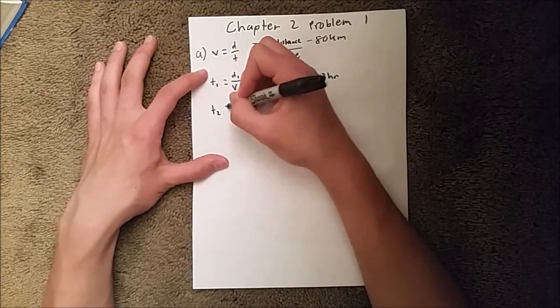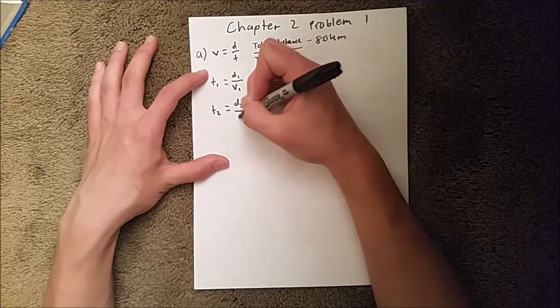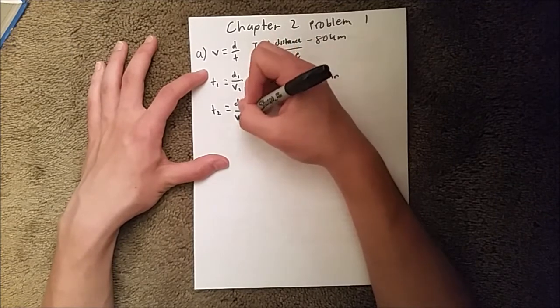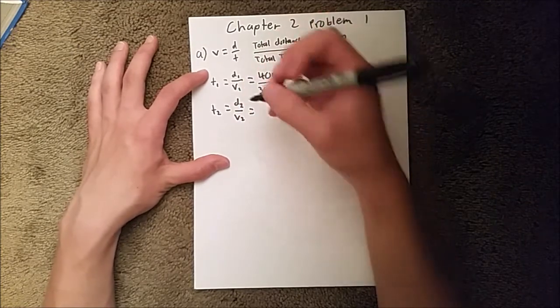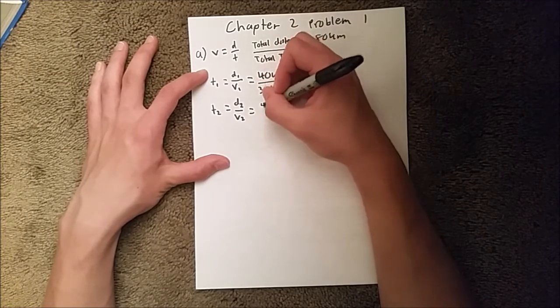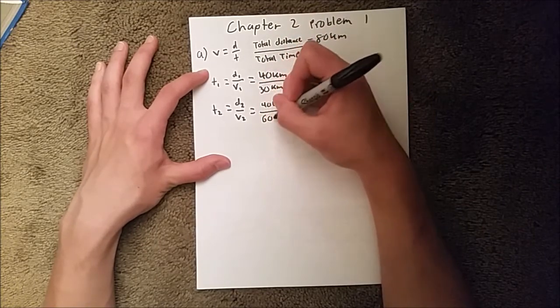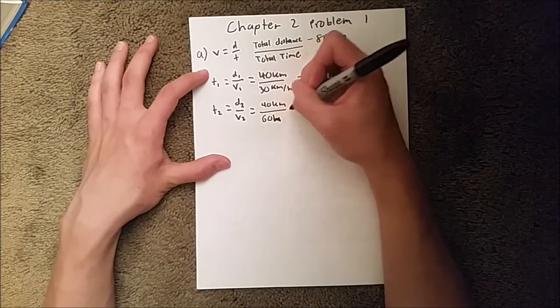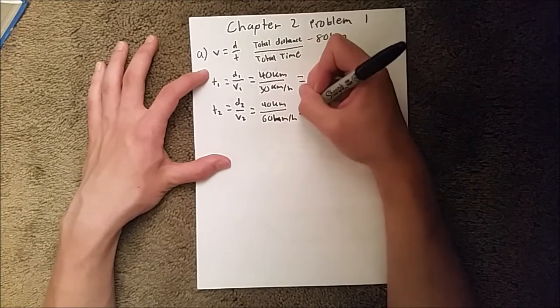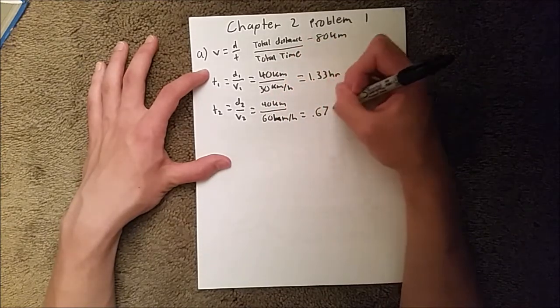And time 2, so the second half of the trip is 40 kilometers at 60 kilometers an hour. And that is 0.67 hours.